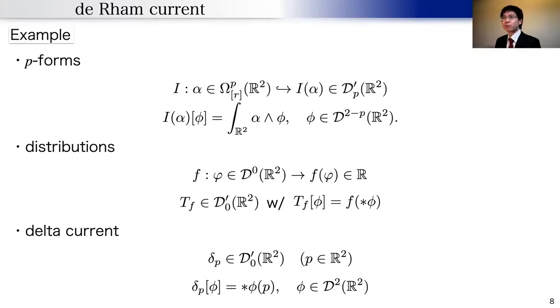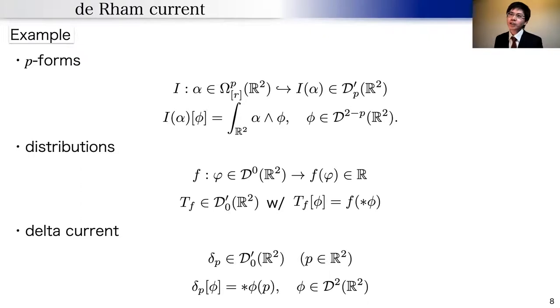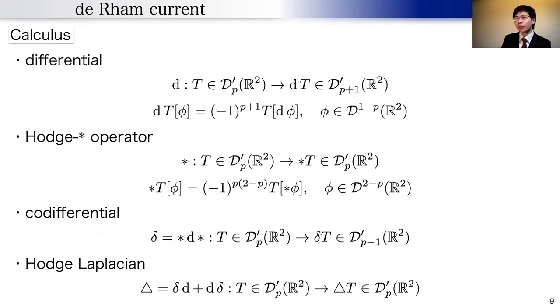Differential forms and distributions are basic examples of currents. Since the integral operator associated with a differential form is a current, differential forms are identified with currents as integral operators. Therefore, the formulation in terms of currents is carried out by first presenting differential forms and then replacing them with currents. The current corresponding to a delta function is a zero-current called a delta current.